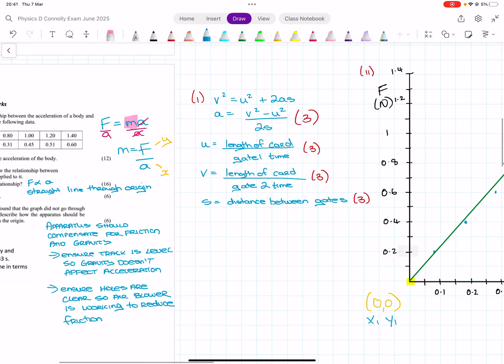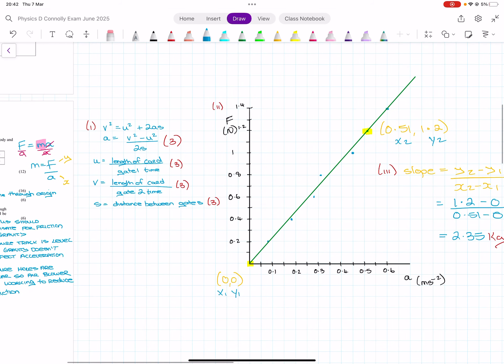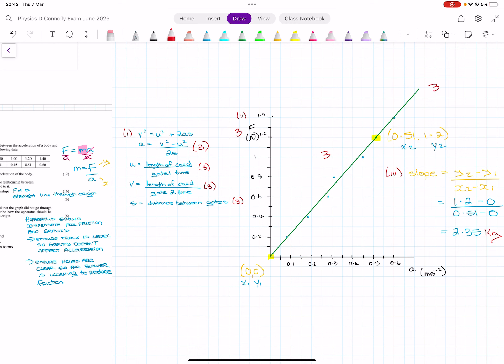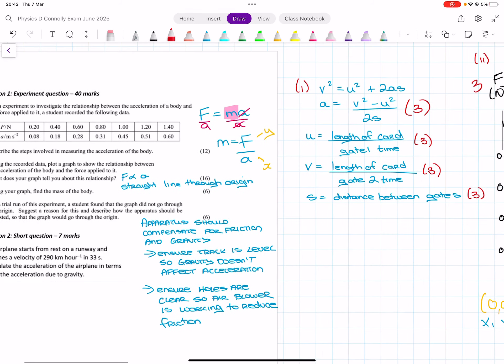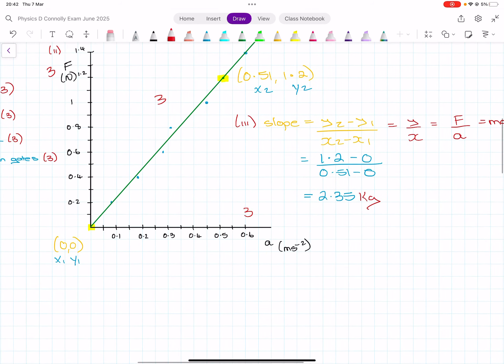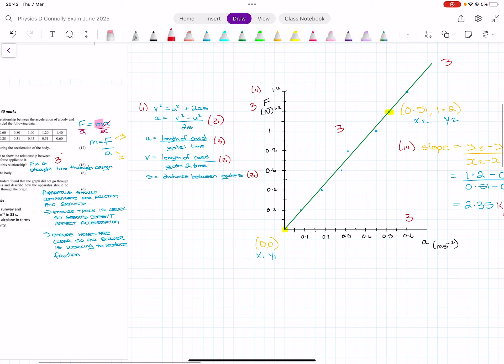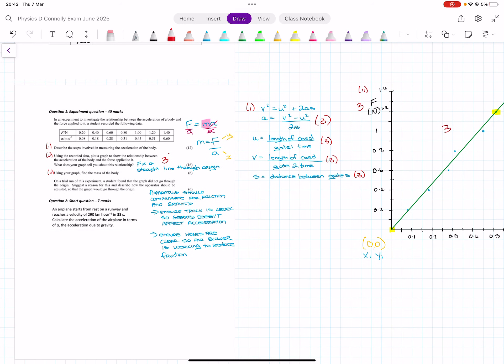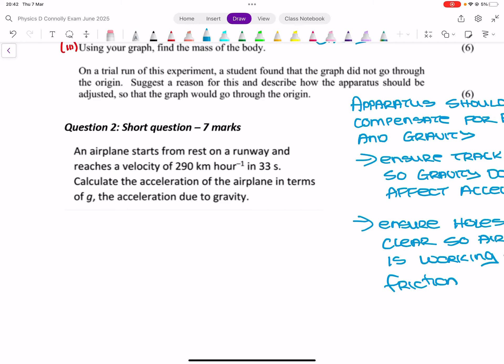So, gravity doesn't affect acceleration. And ensure the holes are clear. So, air blower is working to reduce friction. So, I gave you the marks there. It was 3.333. The graph was 3 for the labeled axes. So, 3 for the labeled axes. 3 for the six points plotted correctly. 3 for the straight line. 3 for a good distribution, which is choosing an appropriate scale. And then, 3 for saying that force is proportional. Your calculation of mass is 3 for the slope, 3 for the answer. And then, this last part was friction. You needed a comment on gravity and a comment on friction.